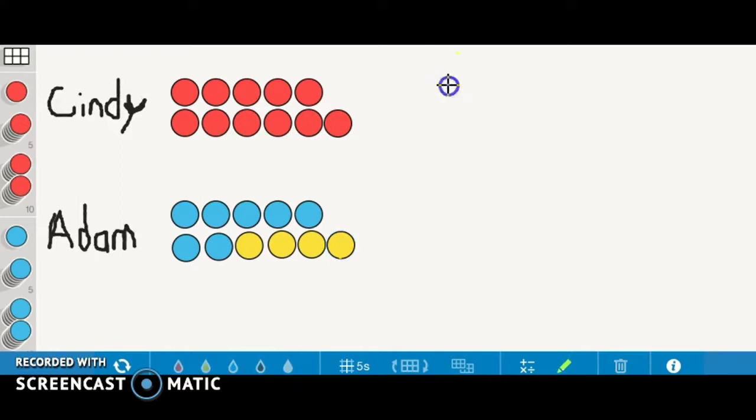Next, we will display a pictorial representation. We will draw Cindy's stickers here and Adam's stickers down there.